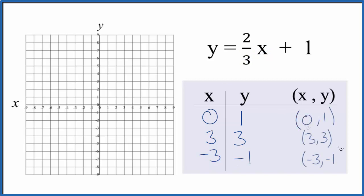So these are the points we'll graph for the linear equation y equals two-thirds x plus one. So we'll start on the x axis. X is zero, y is one. Then we have x is three, y is three, and finally x is negative three, y is negative one.